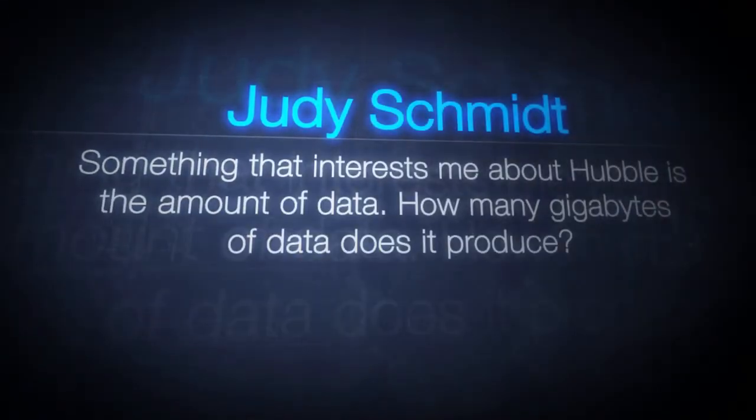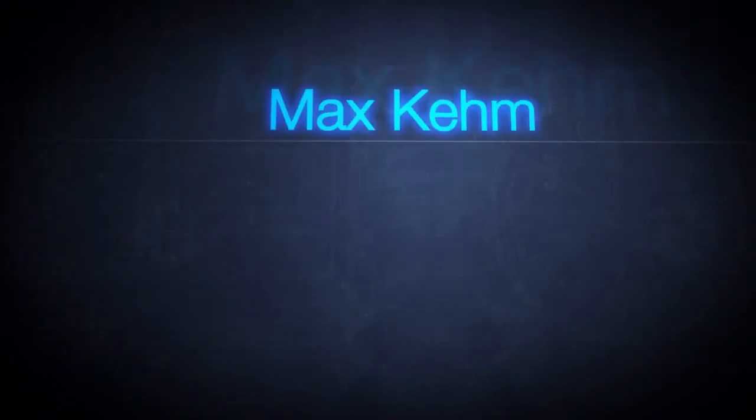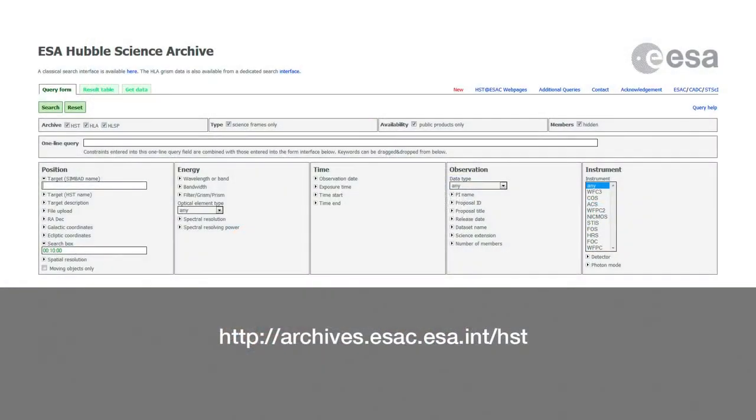We also received several questions about Hubble data. Something that interests me about Hubble is the amount of data. How many gigabytes of data does it produce? How is the great amount of Hubble data stored and processed? The amount of data produced by Hubble isn't actually all that much. It sends back about 120 gigabytes of data to Earth every week. That's about 26 DVDs. The data are first sent to New Mexico, then to NASA's Goddard Spaceflight Center, and finally to the Space Telescope Science Institute in the USA, and to several institutes across Europe where the data are processed and archived. By the way, after one year, absolutely anyone can download and use the data for free.